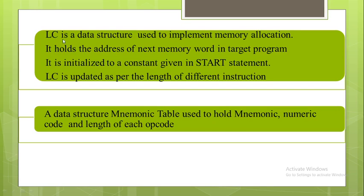A data structure called the location counter is introduced to implement memory allocation. The location counter always holds the address of the next memory word in the target program. It is initialized to the constant specified in the START statement, which is always followed by a constant value.